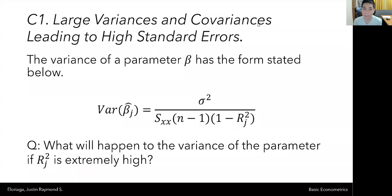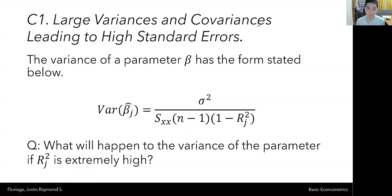Hi everyone and welcome to this video on the consequences of multicollinearity. In the past two videos, we discussed what multicollinearity was, and in the last video we discussed the concept of an auxiliary regression, where we derived the auxiliary R-squared. Now we're going to discuss the consequences of severe multicollinearity — what exactly are the things that multicollinearity can do that are a detriment to our model?